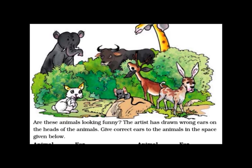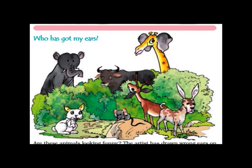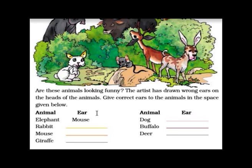Give correct ears to the animals in the space below. Can you see this elephant? What kind of ears are these? Whose ears are these? It is the ears of a mouse. Then you can see a giraffe here — the ears are of an elephant. So you have to do this correction in the space below. There is a column: Animal and its ears. Elephant has ears of mouse.